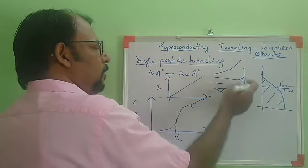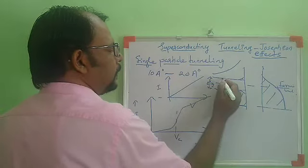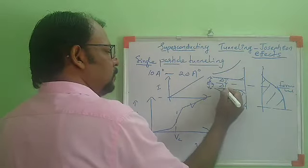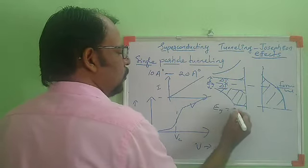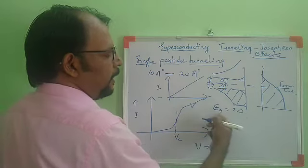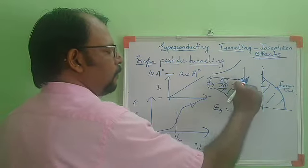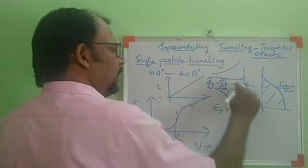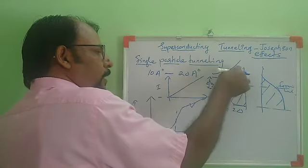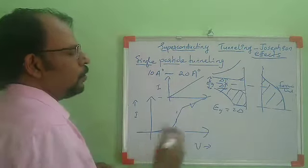If we take delta as the separation between the Fermi level and one energy level, then the separation on the other side is also delta, giving E_g equal to 2 delta. To make the conductor normal, we should provide an energy gap E_g equal to 2 delta, where delta is the separation of the energy level from the Fermi level. The free electrons in the conduction band and the super electrons are separated by an energy gap E_g equal to 2 delta.